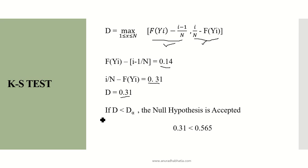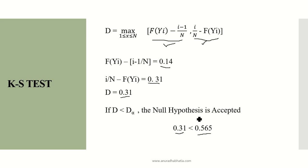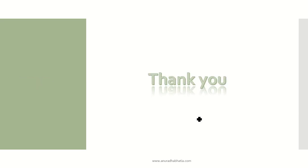Since D equals 0.31 and D-alpha equals 0.565, and D is less than D-alpha, the null hypothesis is accepted. Using this KS test, we have proved that for this particular situation, the null hypothesis is accepted. Thank you.